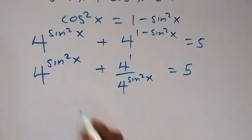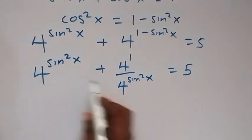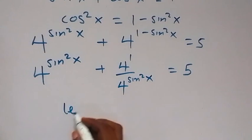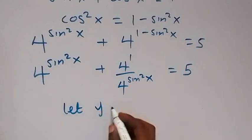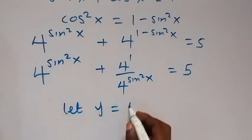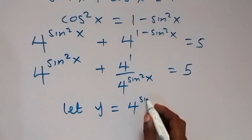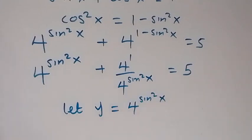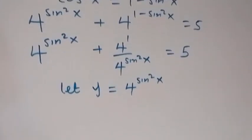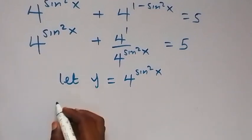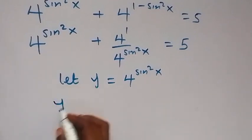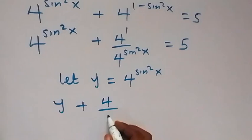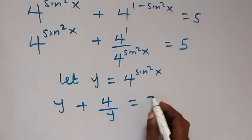We notice 4 raised to the power sine squared x is common, so let y equal 4 raised to the power sine squared x. Writing the equation in terms of y, we now have y plus 4 over y equals 5.